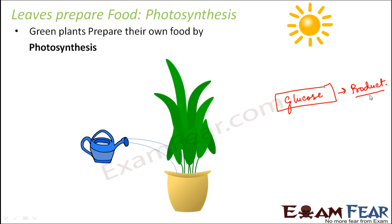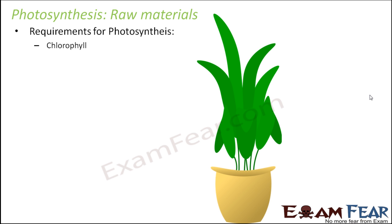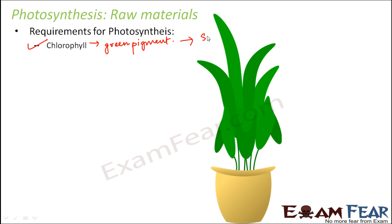There are certain raw materials needed for photosynthesis. The first requirement is chlorophyll — if chlorophyll is not there, photosynthesis will not happen. Chlorophyll is the green colored pigment present in the leaves of the plant. It utilizes the energy of the sun, which is why the process takes place in the presence of sunlight. They utilize the solar energy stored in sunlight.